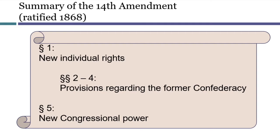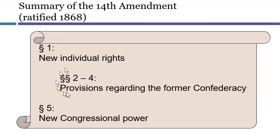The new rights conferred in the 13th and 14th Amendments did not explicitly include the right to vote. That was still under the control of the states. However, the 14th Amendment had some language intended to encourage, but not require, states to extend voting rights to free people of color. This provision was found in Section 2 of the 14th Amendment.